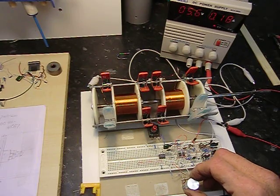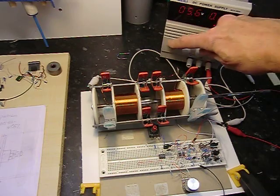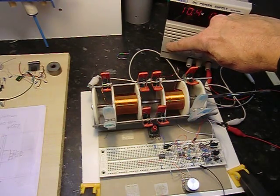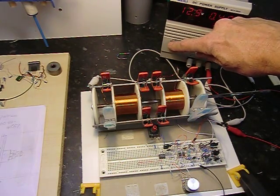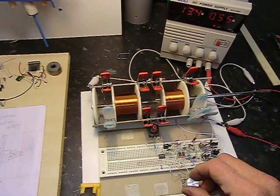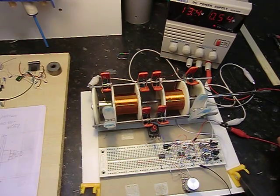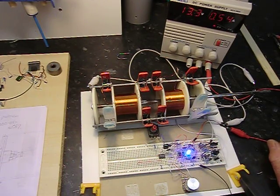However, when I adjust it to about this frequency and push the voltage up to 14 volts, it goes right between the two coils and out the other side.